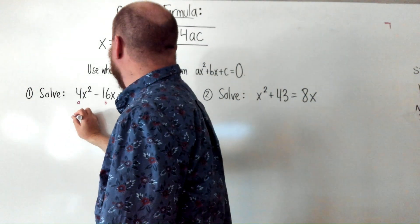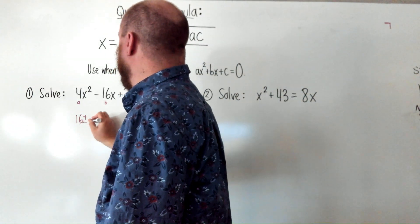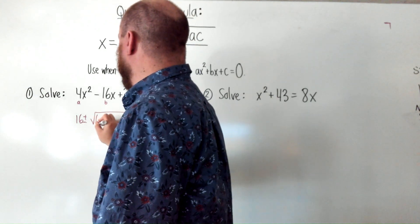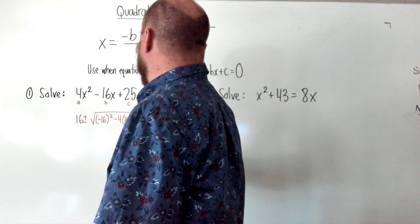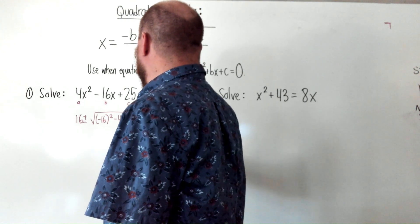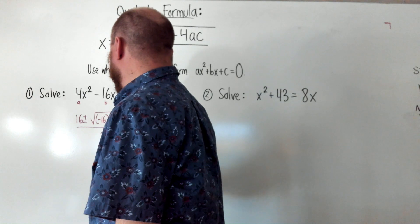We're going to get 16 plus or minus the square root of negative 16 squared minus 4 times 4 times 25 all over 2 times 4.